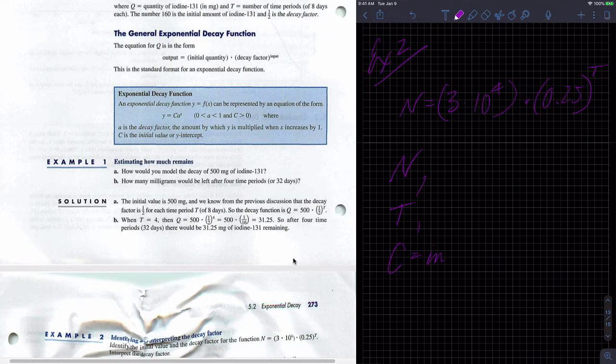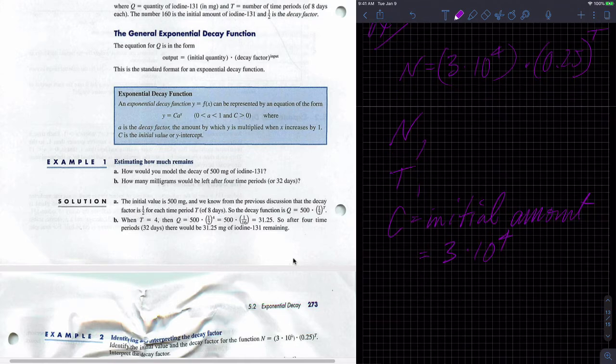Now the initial amount, our initial amount, we usually label it with a C or starting amount, if you prefer, is equal to three times 10 to the fourth, or what is that? 30,000, I do believe.